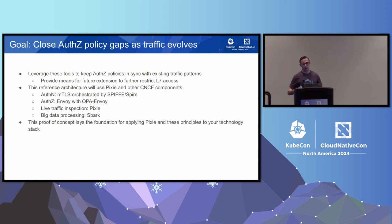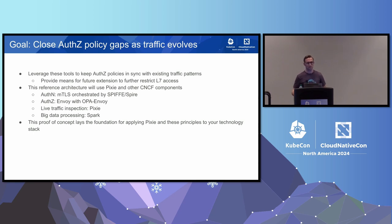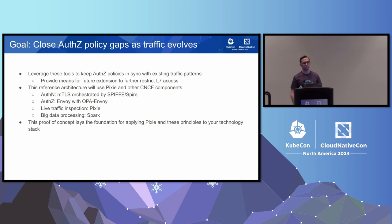We're going to be talking about Pixie and other CNCF components, but really this will fit into any architecture. You probably have your own authentication already and your own authorization in place. Pixie is the thing we're going to use to work with any of those tools. For this reference architecture, we will use Mutual TLS for authentication, Envoy and the Open Policy Agent for authorization, Pixie to inspect the live traffic and do the data processing needed to generate the policies, and the final step will be orchestrated by Spark to do the final policy generation.